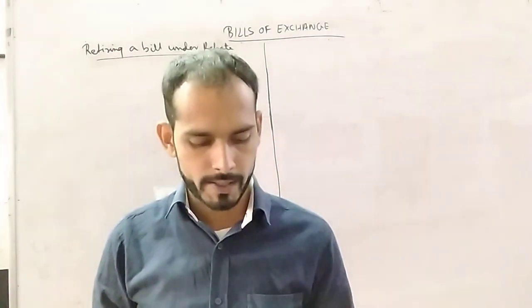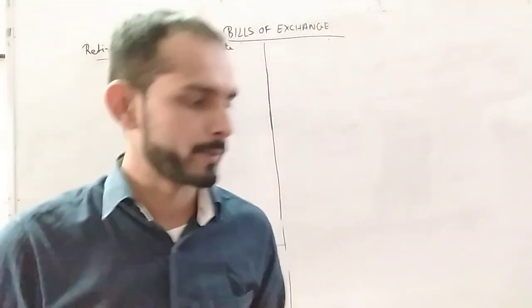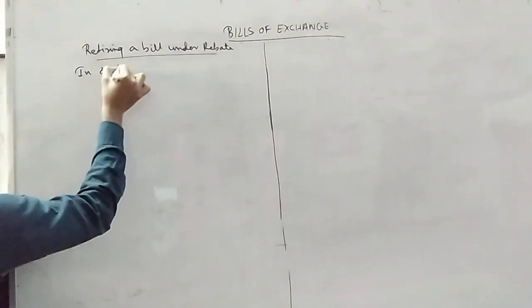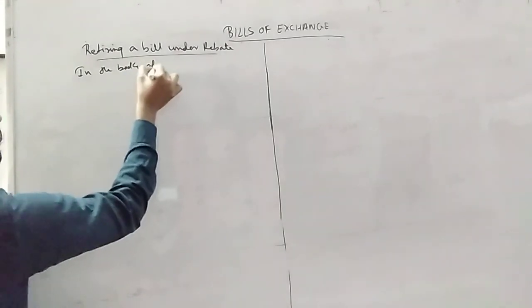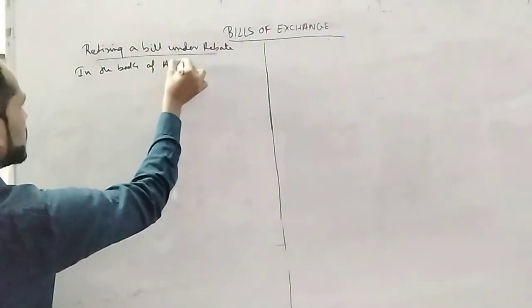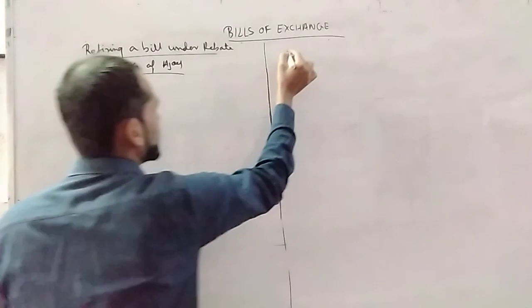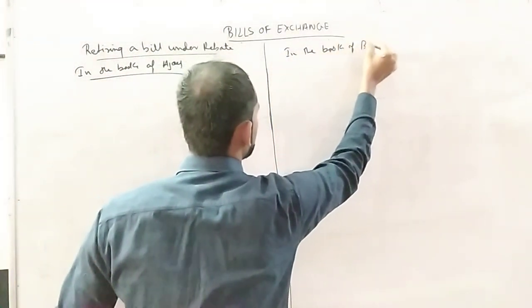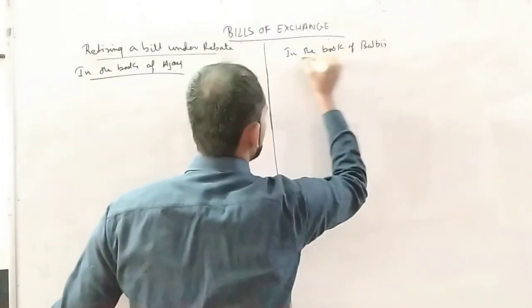Show the entries in the cash book of two parties - one is Ajay and one is Balbir. In the books of Ajay and in the books of Balbir.